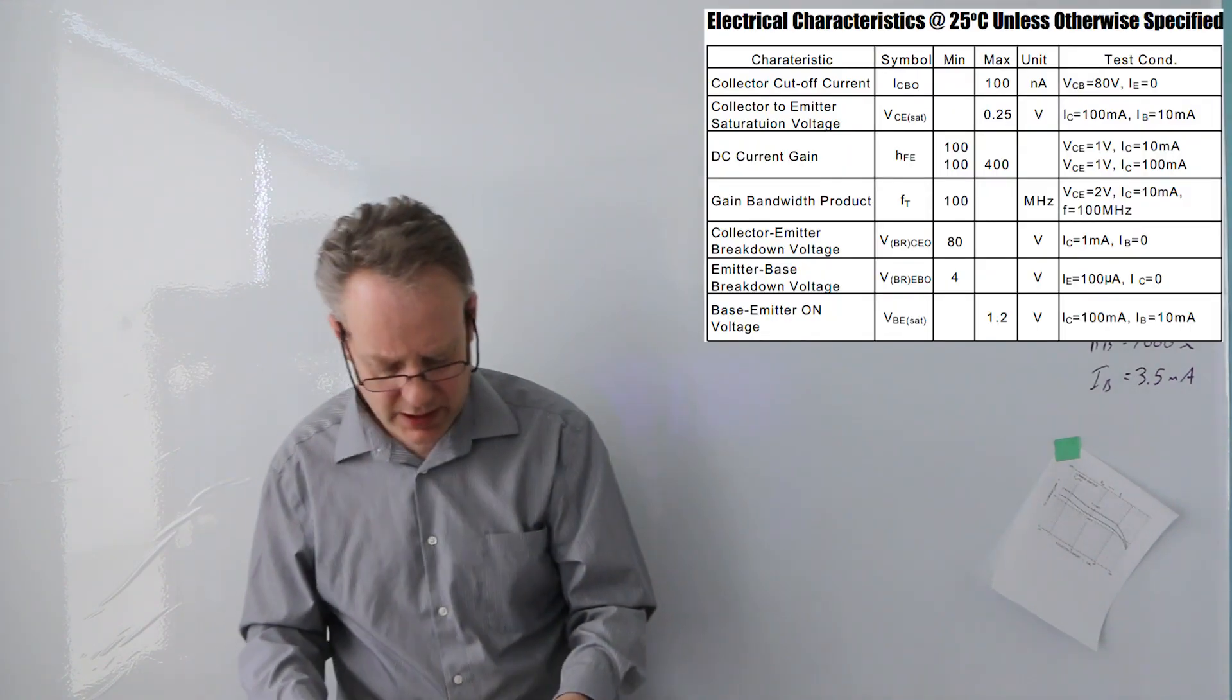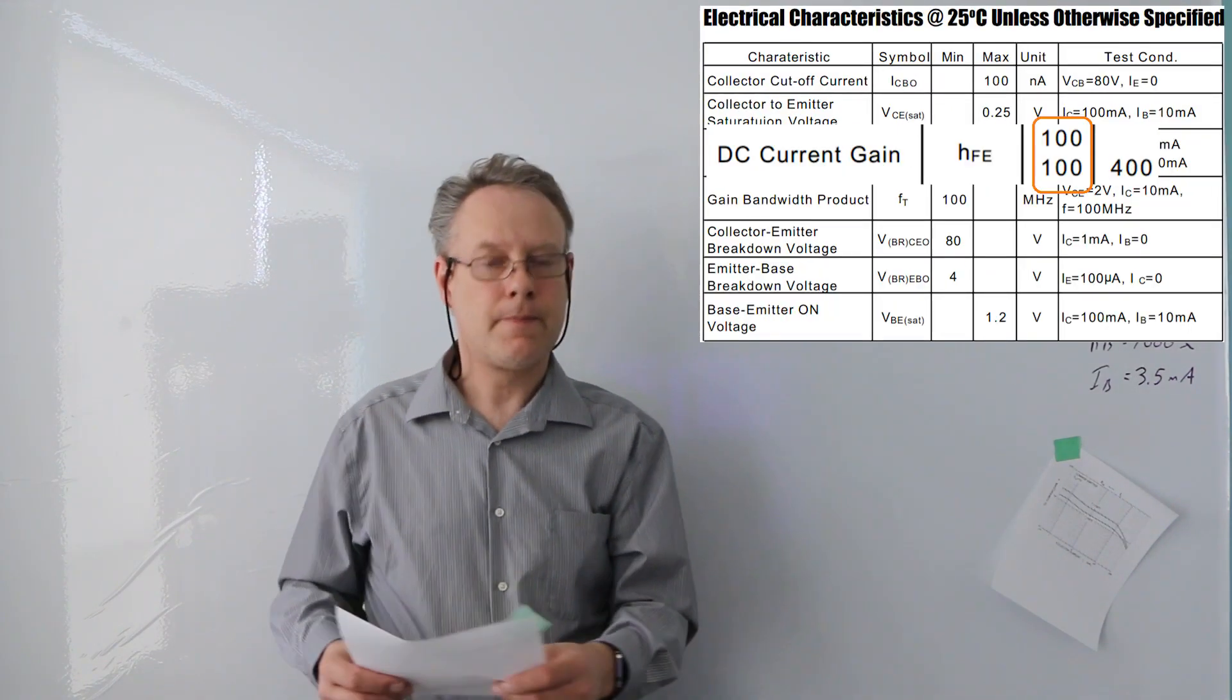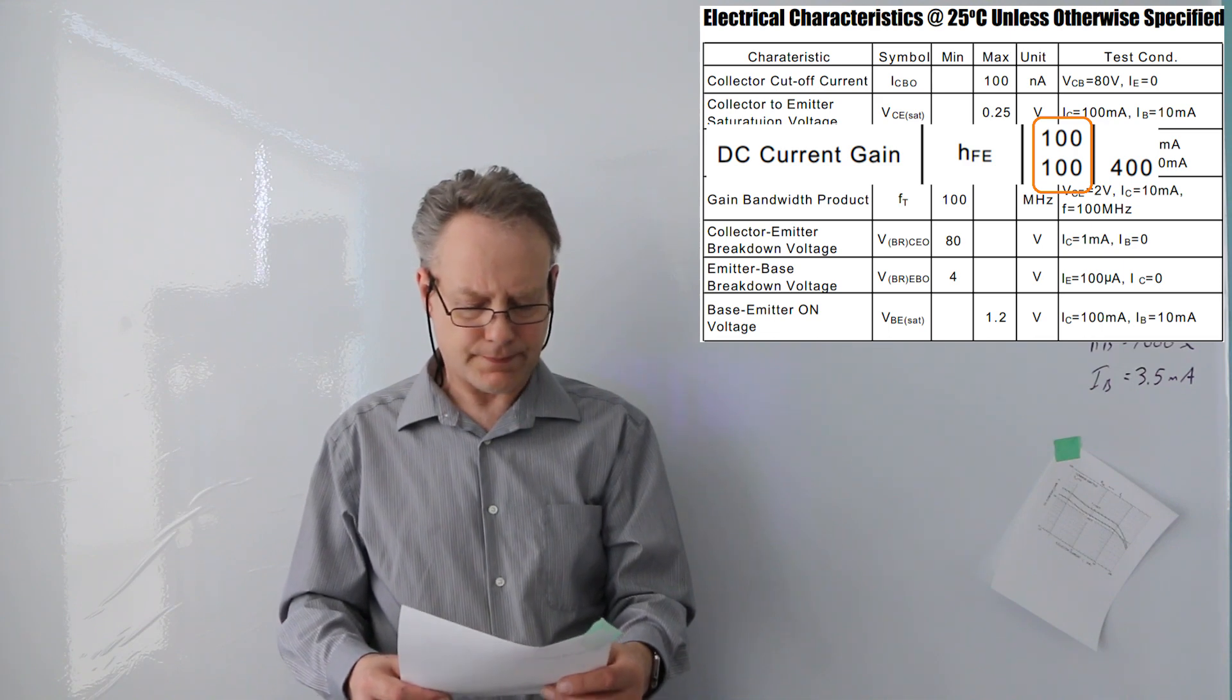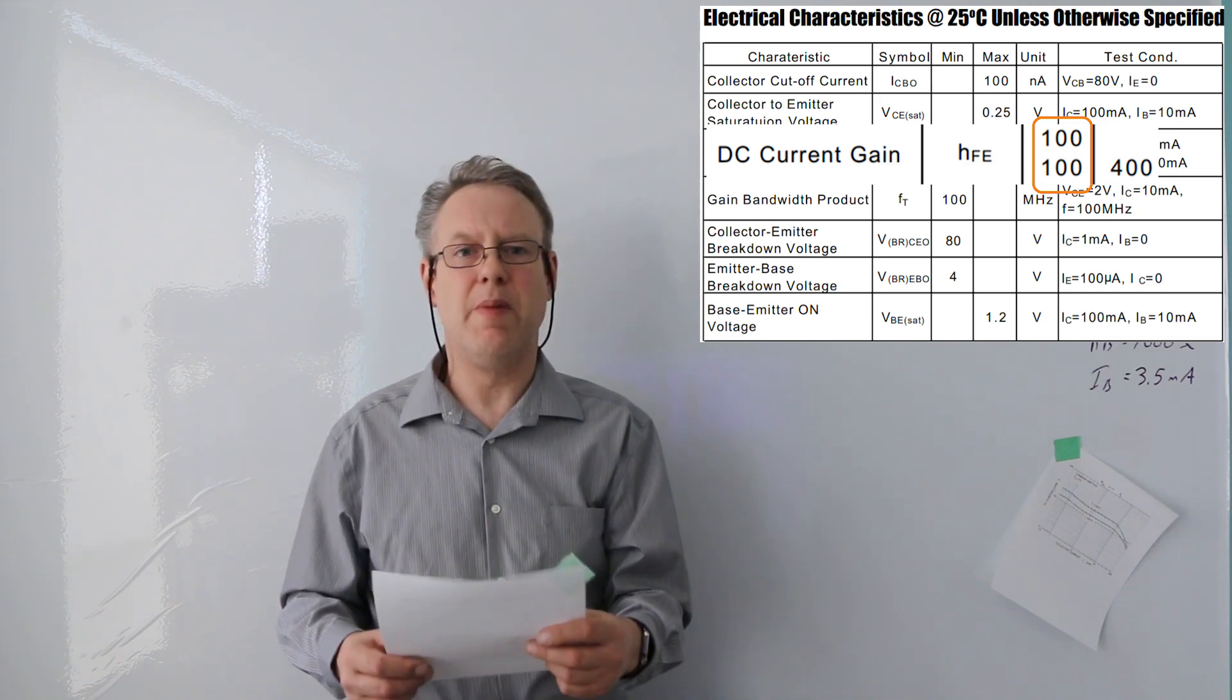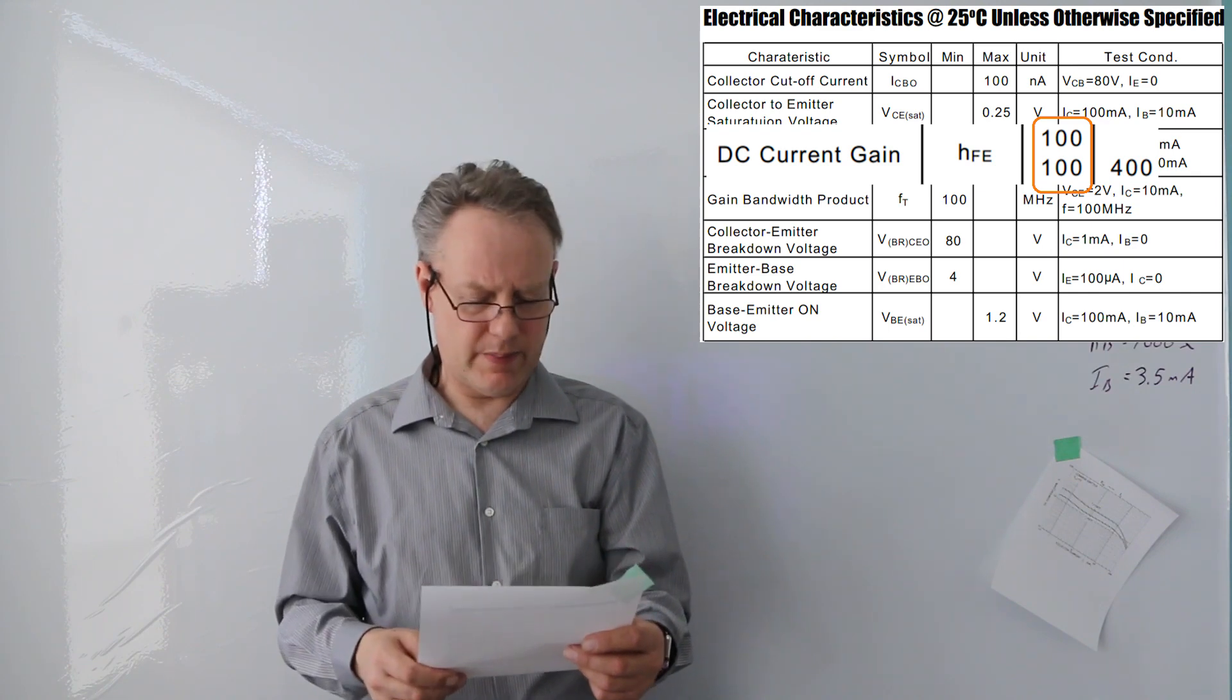If we actually look at the data sheet, we can take a look at the gain, and you can see the gain is 100 minimum. That's the smallest amount it can be.